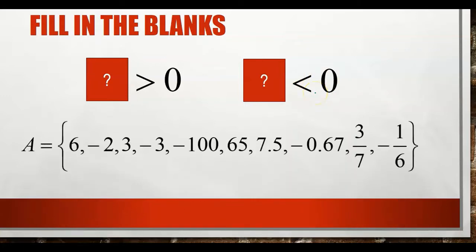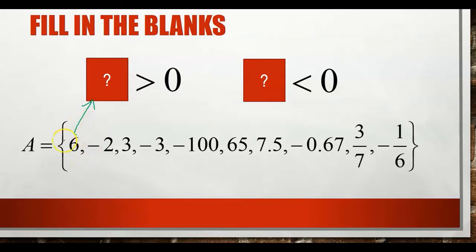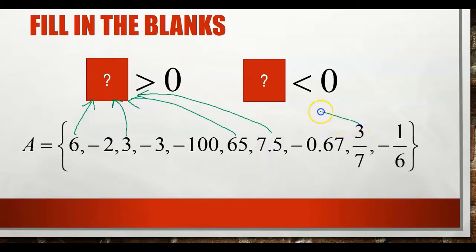We have a set A with 10 numbers. We're going to fill in the two boxes with the appropriate number. For the first relation, something greater than 0 — we pick any positive number from set A. Number 6 is positive, 3, 65, 7.5, and 3/7 are also positive numbers. So these 5 numbers go into the first box.